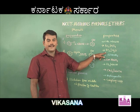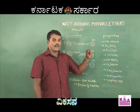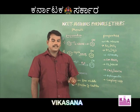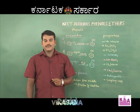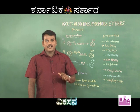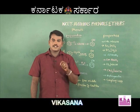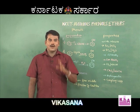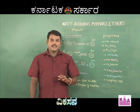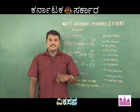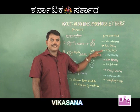Phenol reacts with bromine in the presence of carbon disulfide or carbon tetrachloride, forming a mixture of ortho-bromophenol and para-bromophenol. Phenol can also react with bromine water, and here the product is 2,4,6-tribromophenol, which is a white precipitate indicated by the decolorization of bromine.